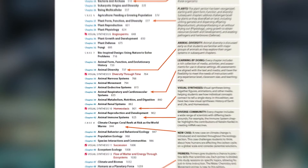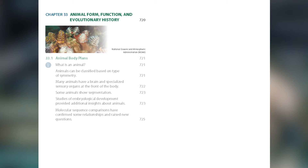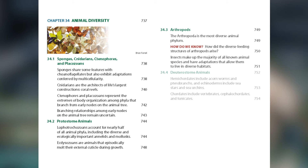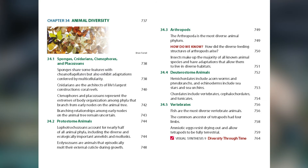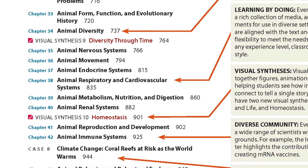The next set of chapters is our animal chapters, and we follow a similar pattern. The first two chapters deal with animal form, function, and diversity — what's an animal, what are the features of animals, and what are the major groups of animals — which provides a great start for the detailed animal chapters that follow. Those subsequent chapters are organized by systems: there's a chapter on the musculoskeletal system, a chapter on the nervous system, a chapter on the endocrine system, and so on.